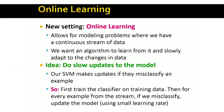Our idea here is the following: we can think that we first train the classifier on the training data, and then for every example that comes from the stream, if we misclassify that training example, we update the model using a very small learning rate. We just want to slightly update the model.